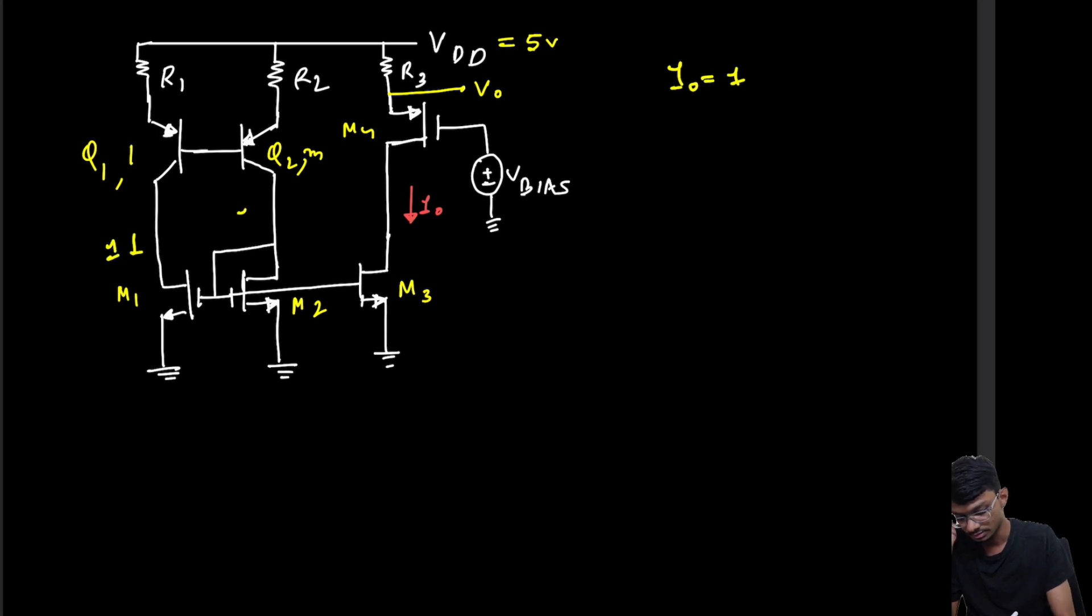So if this I current is flowing through here, and nothing about beta has been mentioned, we will assume beta to be infinity. So this I current flows through here also totally. Through this resistor R1 we have this I current, and through this resistor R2 we have this I current.